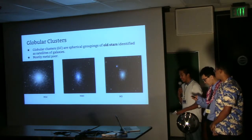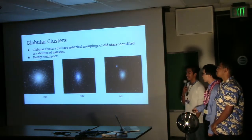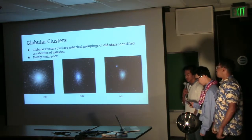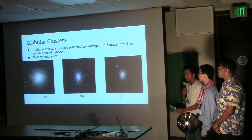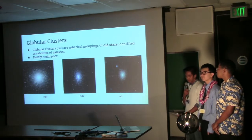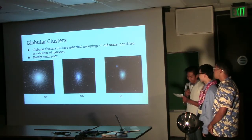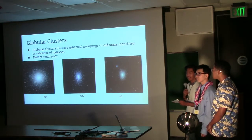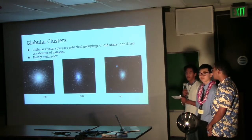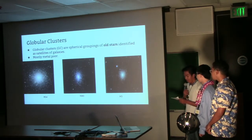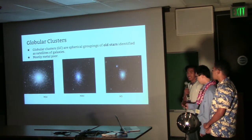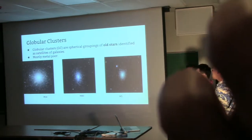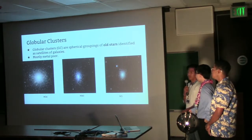Globular clusters, or GCs, are spherical groupings of old stars ranging from 10,000 to a million stars, mostly composed of stars with a solar mass less than 0.8, meaning that they're very old and metal poor. They are located on the halo of the galaxy, which is why they're identified as satellite galaxies.